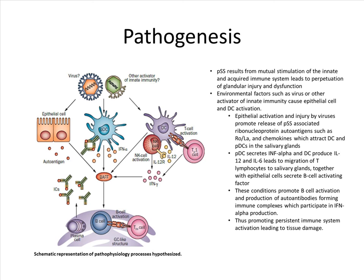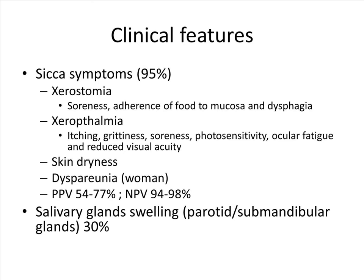95% of patients with Sjogren's syndrome present with xerostomia or xerophthalmia, whereby they complain of soreness, sticking of food to the mucosa, or dysphagia. Those with dry eyes complain of itching, grittiness, soreness, photosensitivity, ocular fatigue, and reduced visual acuity. A proportion also complain of skin dryness, dyspareunia in women, and 30% would have salivary gland swelling.